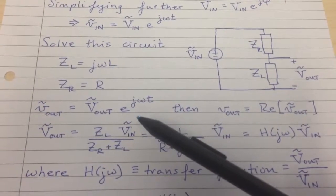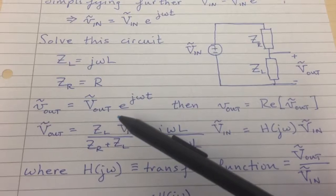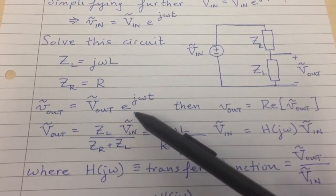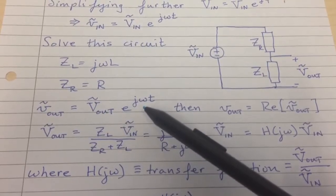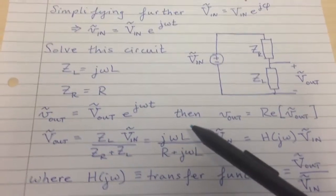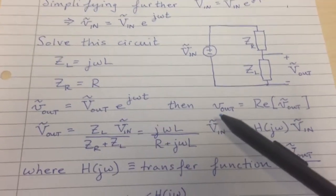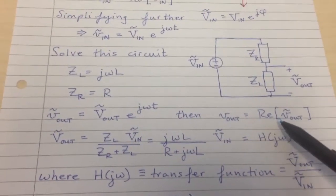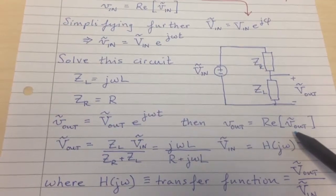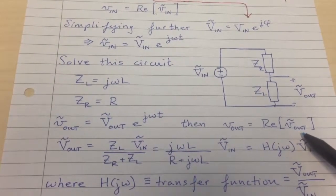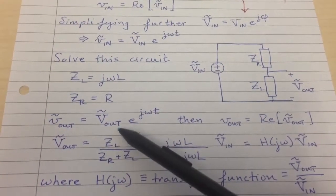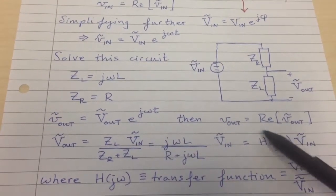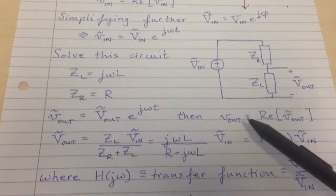Then we have this V_out tilde is going to equal that DC output voltage times that boring e^(jωt) term that just keeps on clicking along. And then V_out is going to equal the real part of the V_out tilde function. So we'll solve for this V_out using a very simple DC circuit analysis, and then we'll plug that in here, take the real part to find V_out.